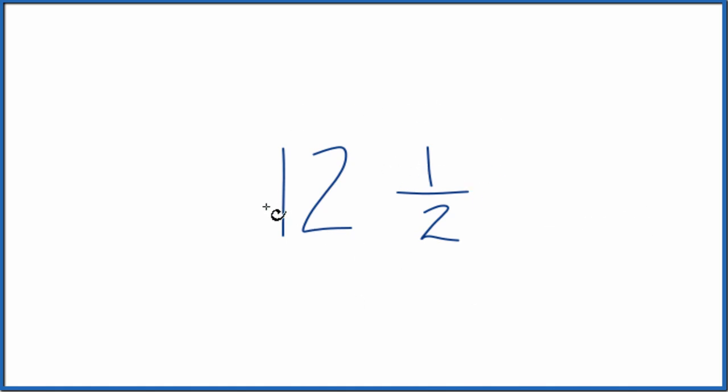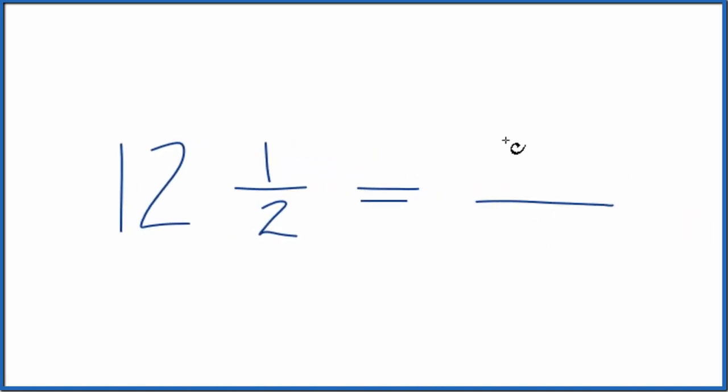So this is a mixed number because we have a whole number, the 12, and then our fraction, 12 and a half. To get it to an improper fraction, we want the numerator to be larger than the denominator. Here's how we do it.